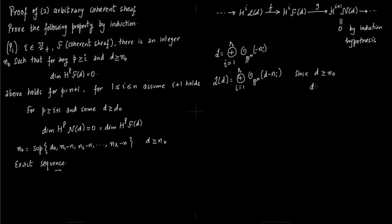Since d is greater or equal to n0, and n0 is the sup, that implies d-ni is greater or equal to -n. That would imply that this L(d) has vanishing cohomology, because d-ni has to be less than -n to have any nontrivial cohomology.